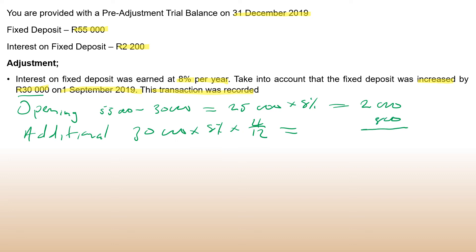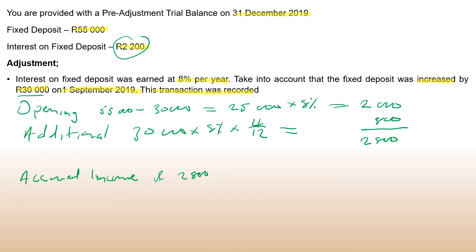So total interest receivable is 2,800 and they only received 2,200. So there is accrued income of 2,800 minus 2,200, which is equal to 600.